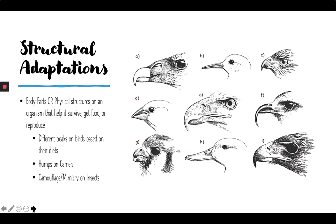A really good example of this is the beaks of different types of birds. Birds have different beaks based on their diets. Some birds have long pointy beaks for poking into holes in trees or the ground to get food. Some birds have sharp curved beaks for catching prey, like an eagle or a hawk. Some birds have sharp hammer-like beaks for pecking holes in trees to get bugs. And some birds have flat beaks used to eat plants or scoop things out of the water. These adaptations depend on the environment of the bird and the type of food they eat.